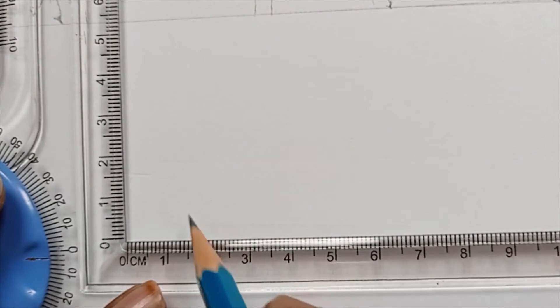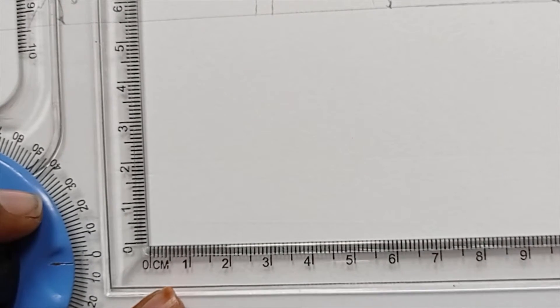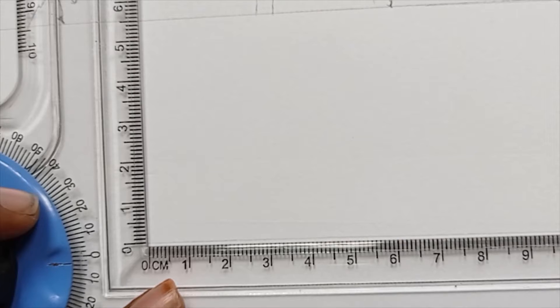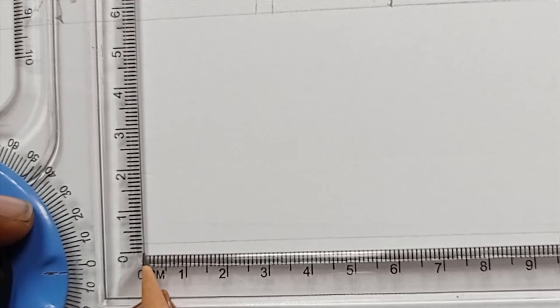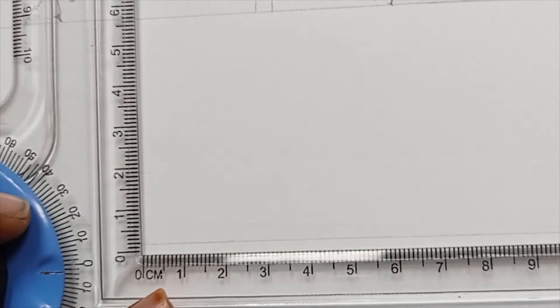So what you do is just make a straight line as reference. Here, pull around 1.5, like this is 1 and this is 1.5, that gap if you are maintaining.